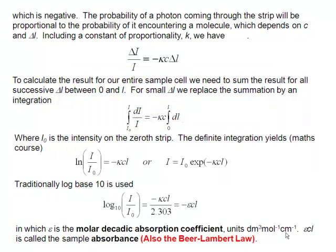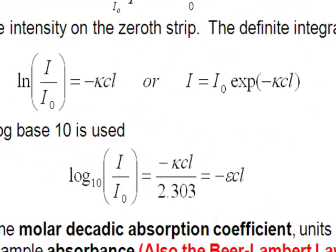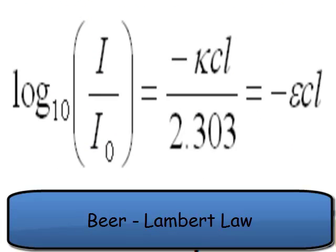So having this epsilon allows us to be quantitative about the strengths of electronic transitions. That whole thing, epsilon CL, is sometimes referred to as the absorbance. And that equation there, log to the base 10, I over I nought is equal to minus epsilon CL, is known as the Beer-Lambert law.